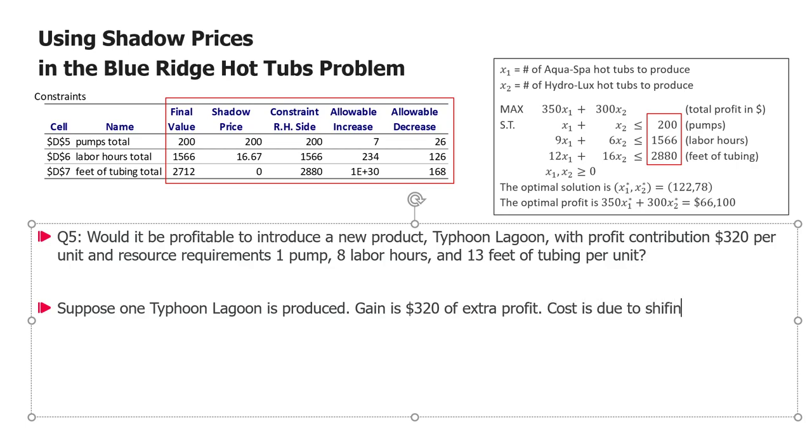Suppose one Typhoon Lagoon is produced. The gain is $320 of extra profit. What is the cost? Well, cost is due to shifting resources away from the old products to Typhoon Lagoon. The Typhoon Lagoon, the unit of Typhoon Lagoon that we're just now producing. What is this cost? Well, if you recall, we know actually the cost of losing resources, because we know every one pump less will be $200 of profit less. Every labor hour less will be $16.67 less, and every foot of tubing will be $0 less. Of course, remember that it actually works only in a certain range up to the allowable decrease, and we should again use only one at a time. However, at the margin, at a small range of changes, we can use those shadow prices, all of them, at the same time.